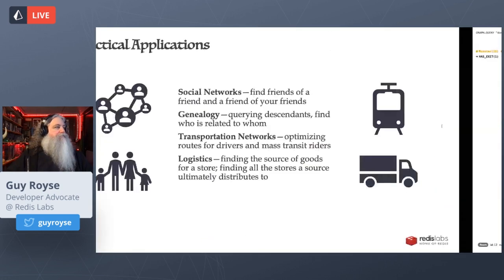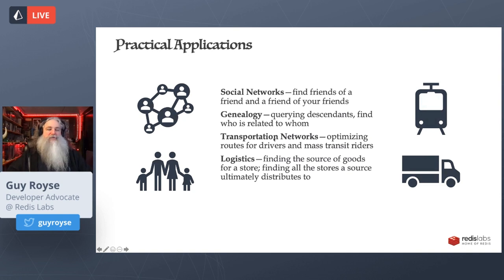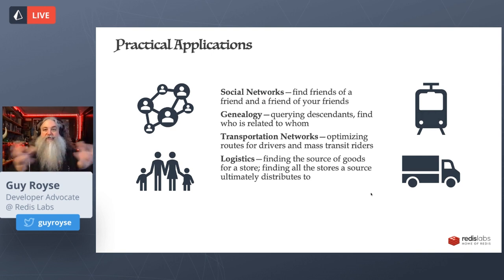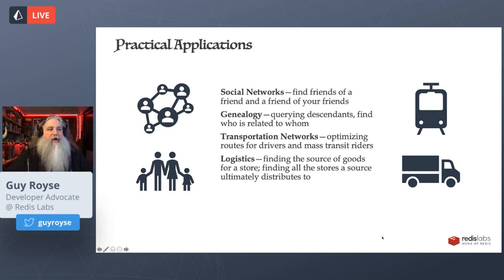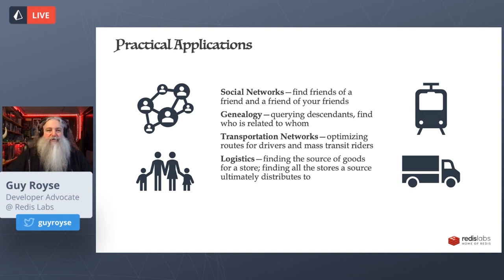Some practical applications: social networks — that's sort of the classic example. You've got genealogy, which is social networks cast over a long time. Transportation networks are natural graphs — intersections could be nodes and streets could be relationships. Logistic networks — tracking where goods go through farms, warehouses, processing facilities, and stores. Really, for anything that's a reasonably small domain model, a graph can be a good candidate, even for problems you might traditionally use a relational database for, like Dungeons and Dragons.